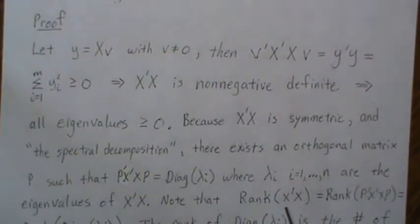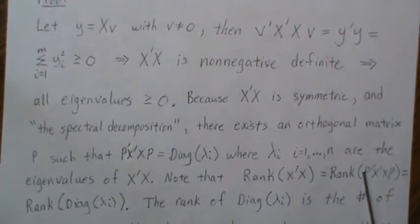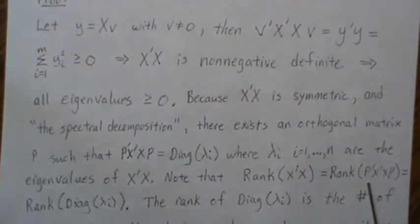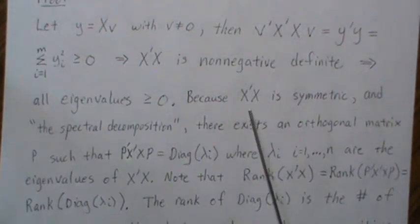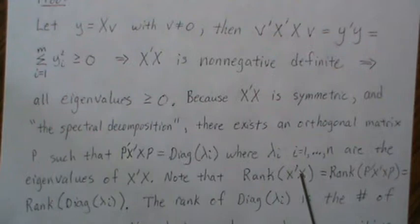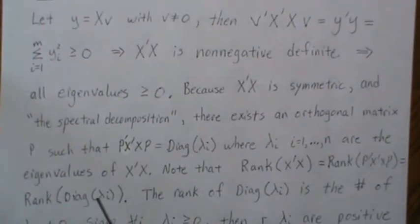Now note that the rank of this matrix is equal to the rank of this matrix where we pre and post multiply it by a non-singular matrix, which equals the rank of this. But this inside is actually equal to the diagonal matrix, so it's equal to the rank of this, but the rank of a diagonal matrix is actually the number of non-zero diagonal elements, or in this case, non-zero lambda I.